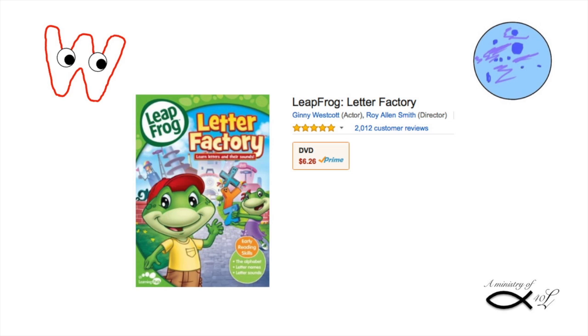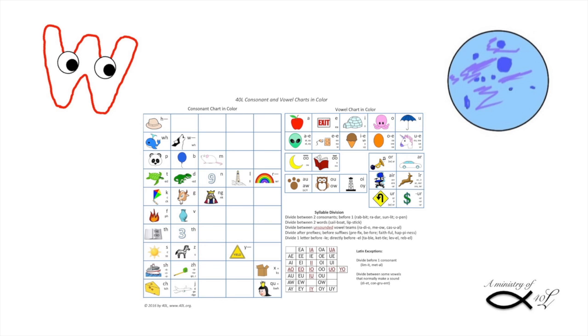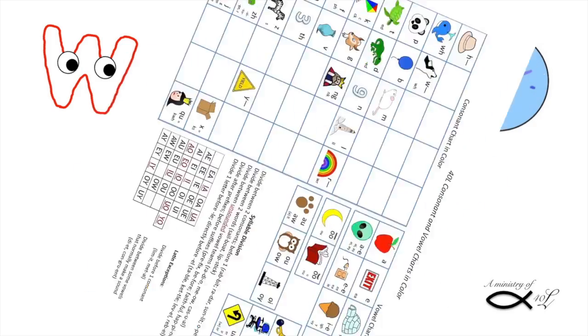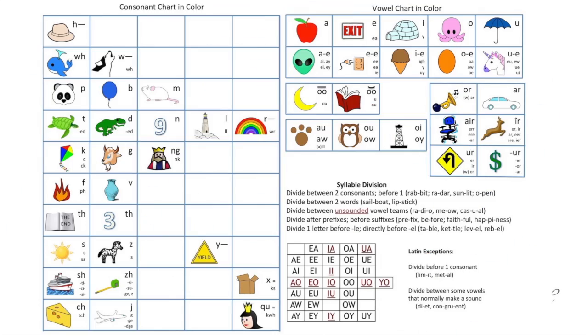I like Leapfrog's Talking Letter Factory DVD for this step. Look at all those stars. It's got over 2,000 reviews and still five stars. That's because that little frog never tires of repeating A says A. You can also use 40L's vowel and consonant charts to learn. Plus, it has more letter combinations for later use.